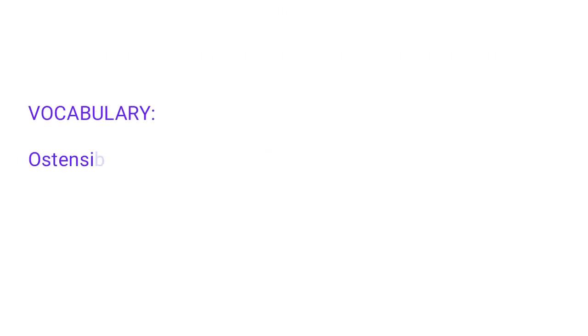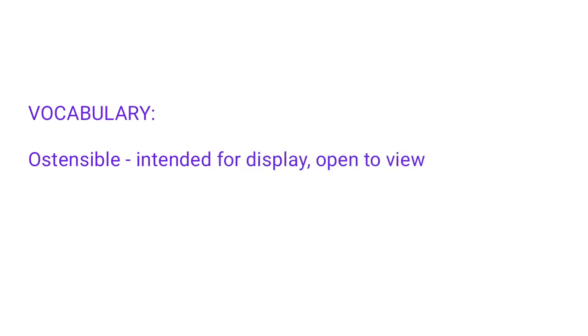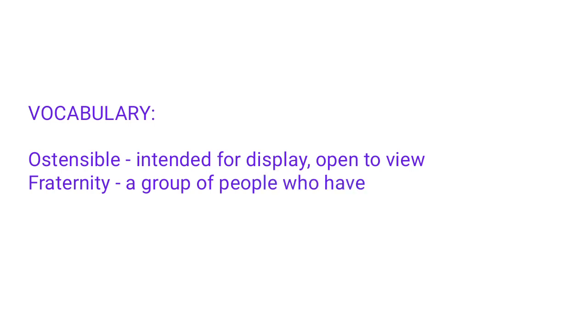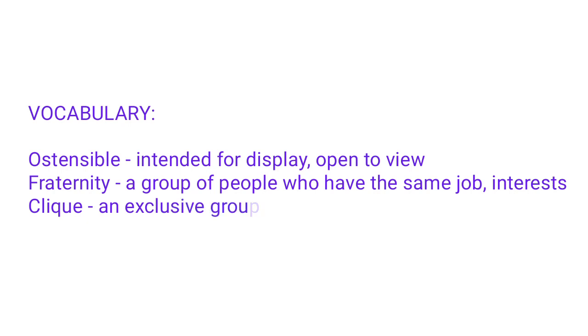Vocabulary: ostensible — intended for display, open to view. Fraternity — a group of people who have the same job and interests. Clique — an exclusive group of people.